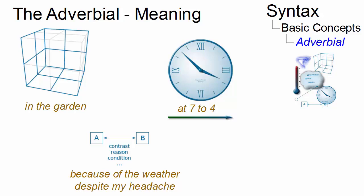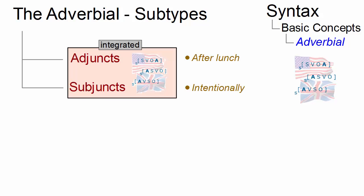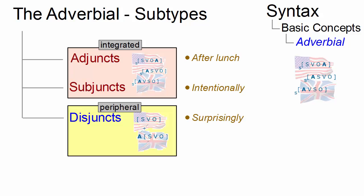Depending on their specific function within clause structure, we can define four main categories of adverbials. These differ in their syntactic status within the sentence. Adjuncts and subjuncts refer to the circumstances of the situation. Disjuncts comment on the form or content of the clause, and conjuncts provide a link between clauses.